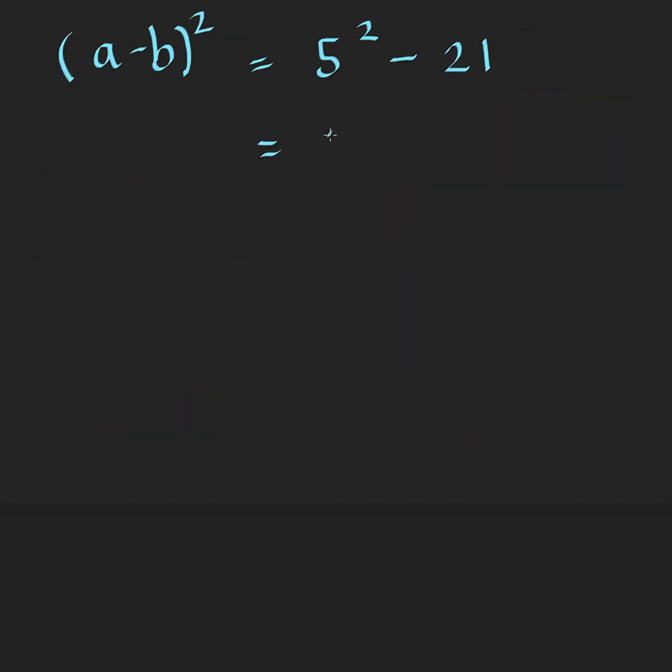These are constants which we can simplify. So we now have here 25 minus 21, which is equal to 4, and that is equal to the square of A minus B. So we take the square root of both sides, take the square root of this, plus or minus the square root of 4.